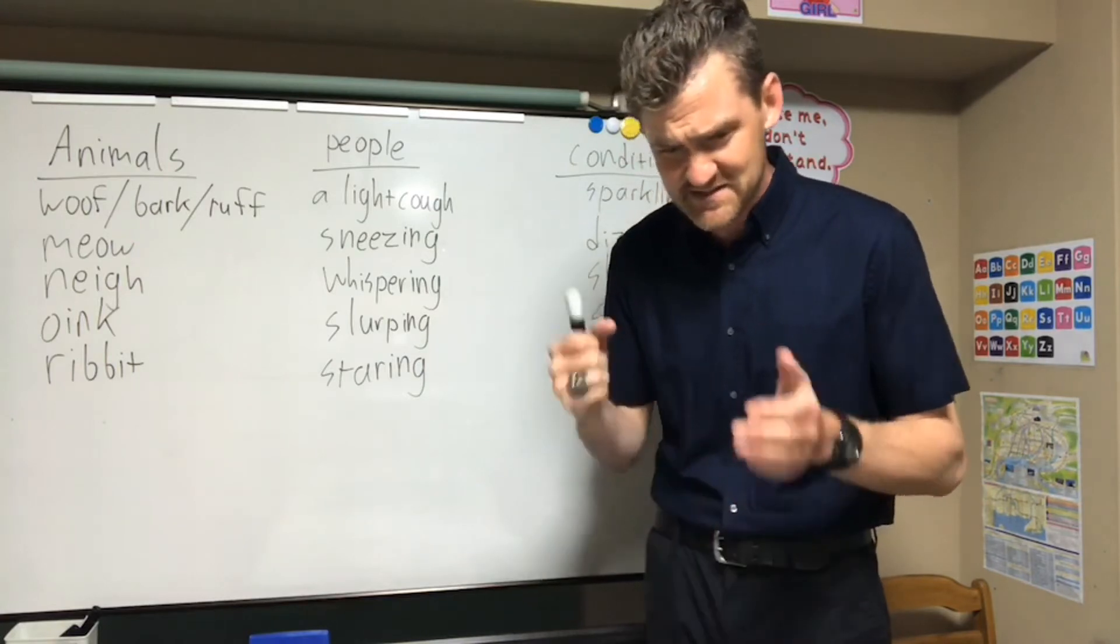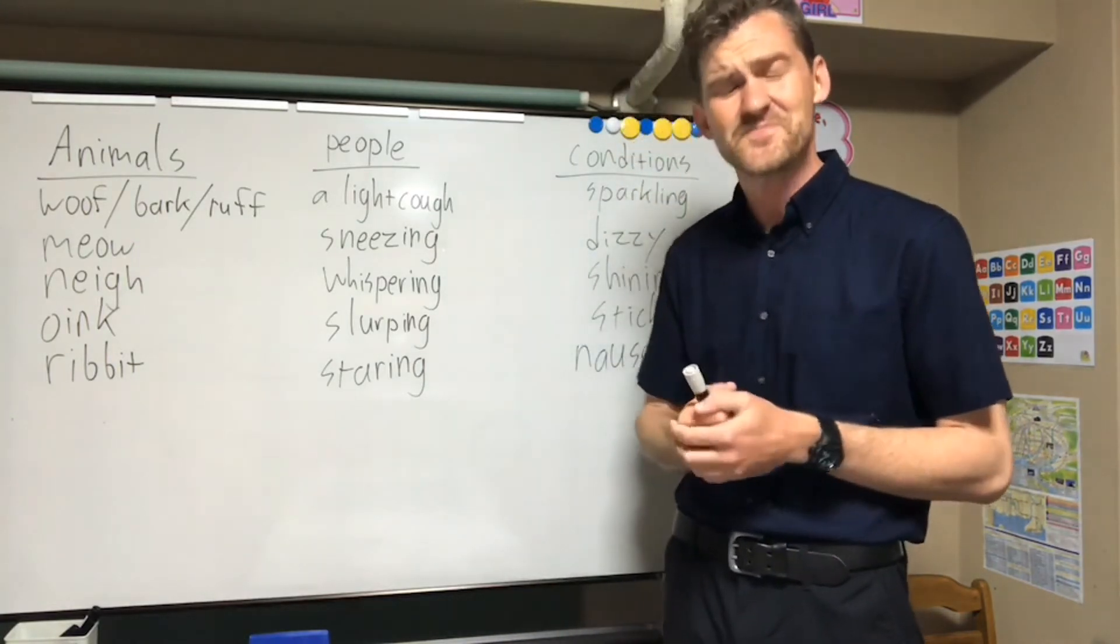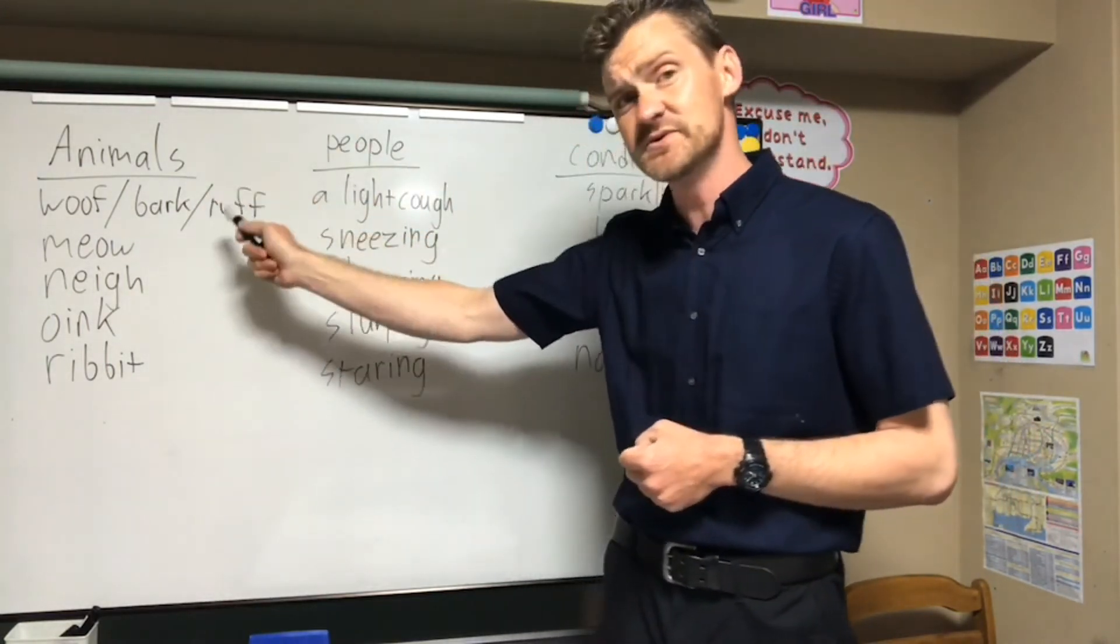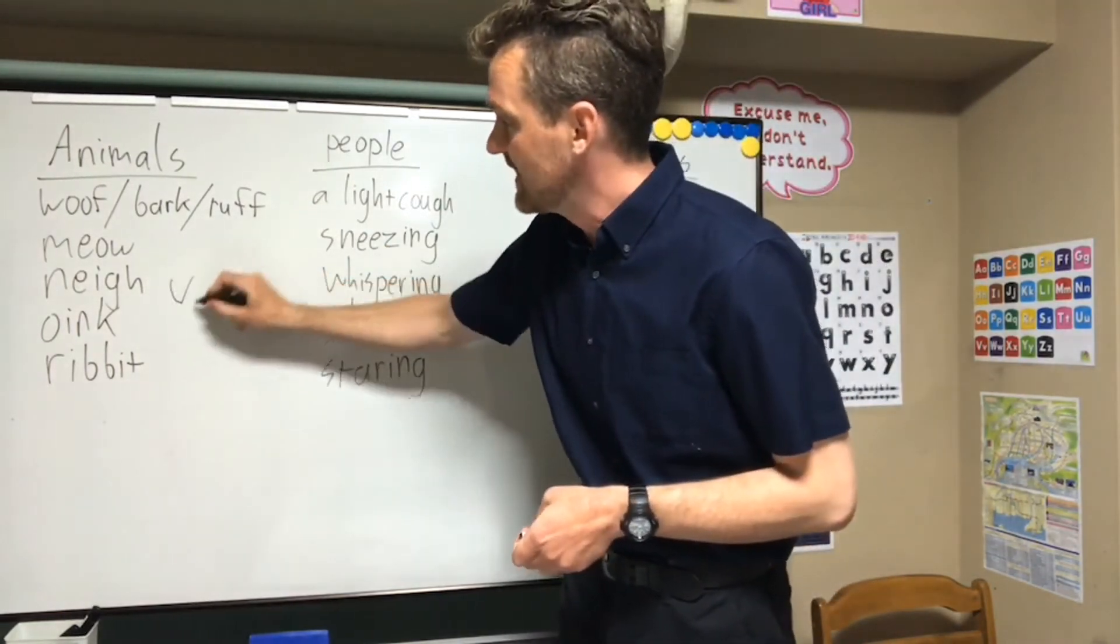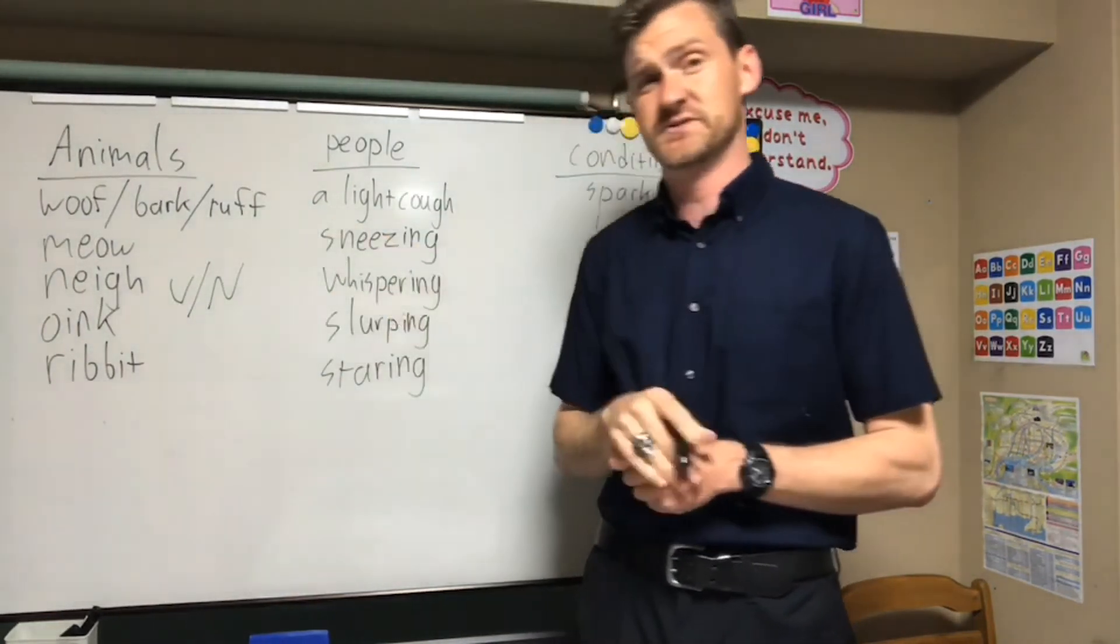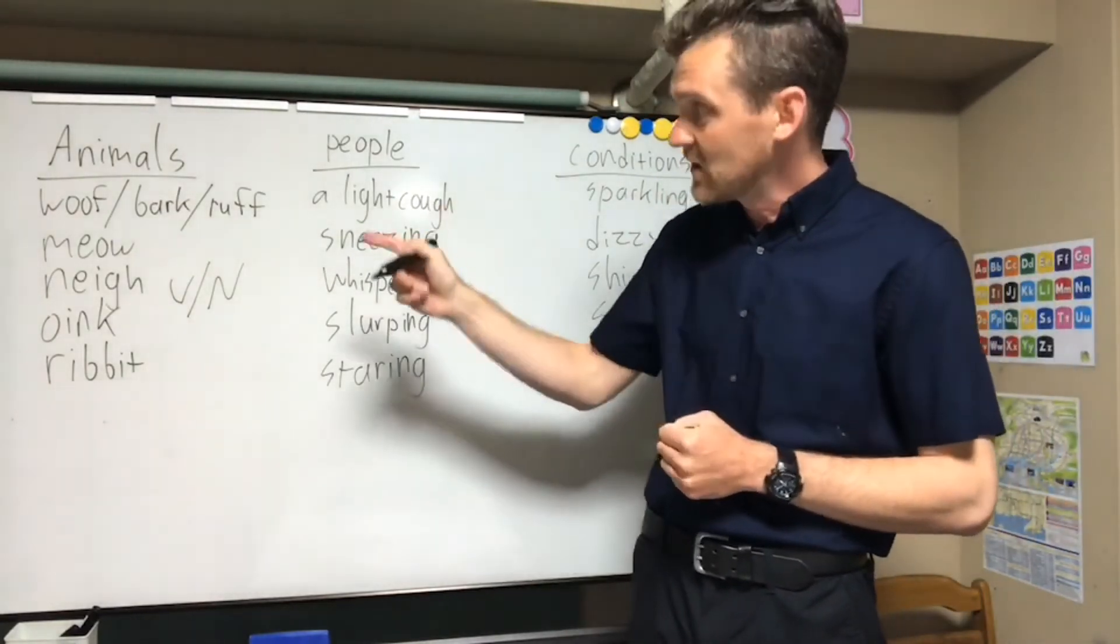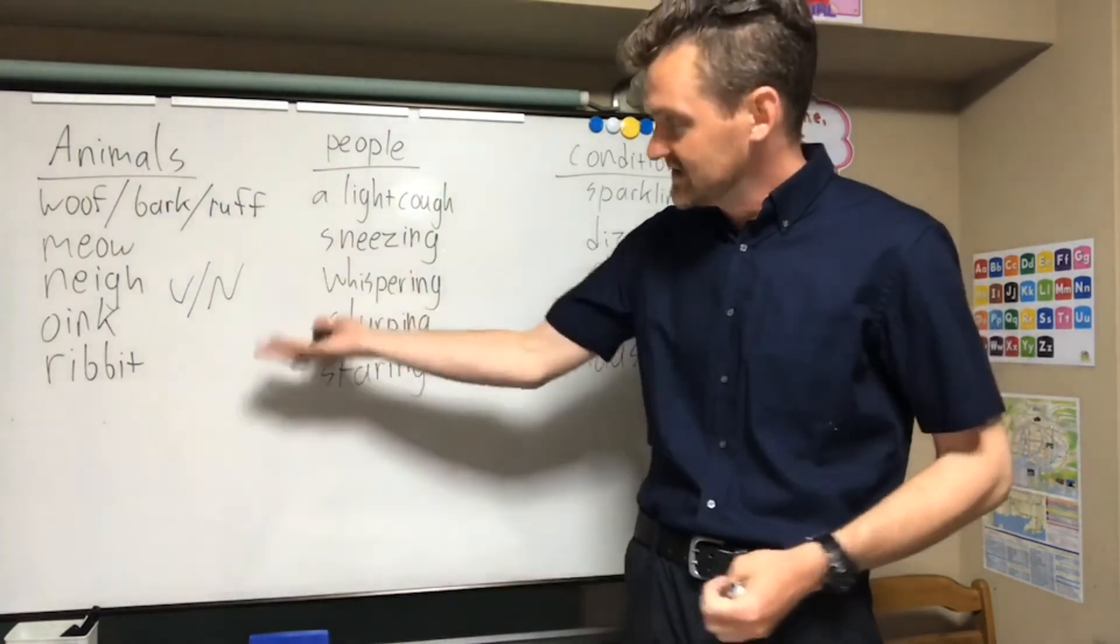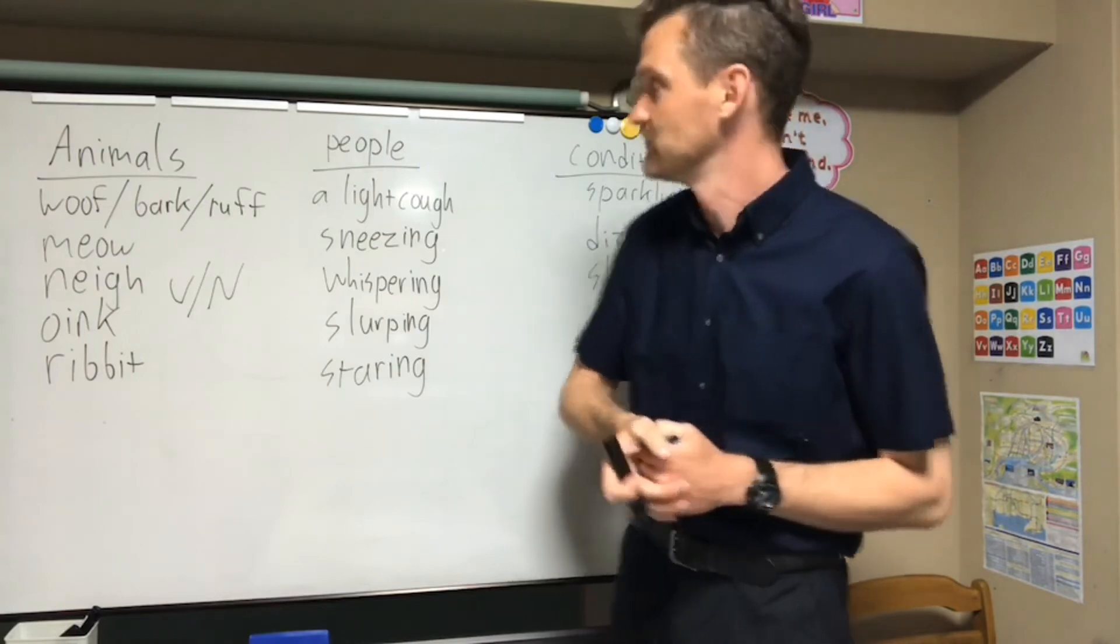Last one's a difficult one. Ribbit ribbit. What animal says ribbit ribbit? That would be a frog. Frog, kaeru-san. Very good, a frog. Japanese, the ribbit is kero kero. It's a little harder. Interestingly about the animals in English, these are all verbs and nouns, doshi to meishi. Both okay. It's a meow. The cat is meowing. It's a ribbit. The frog is ribbiting. All okay.